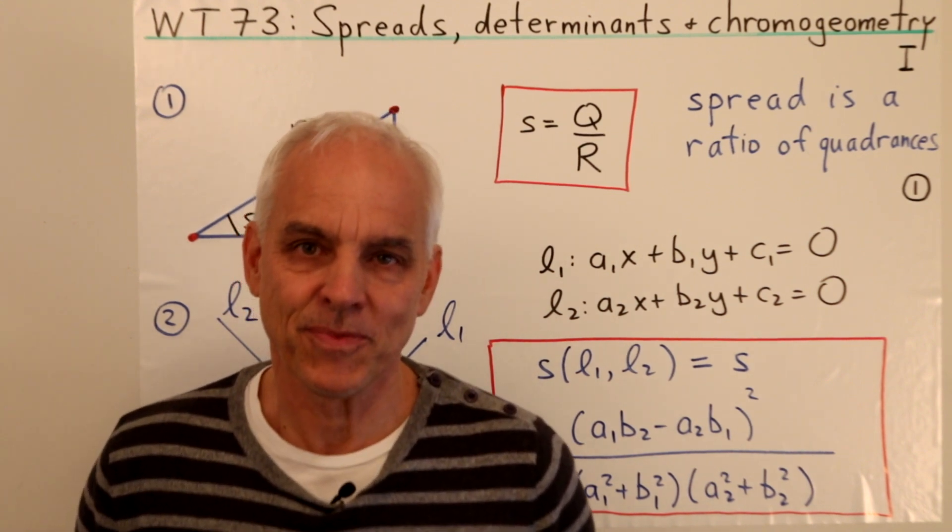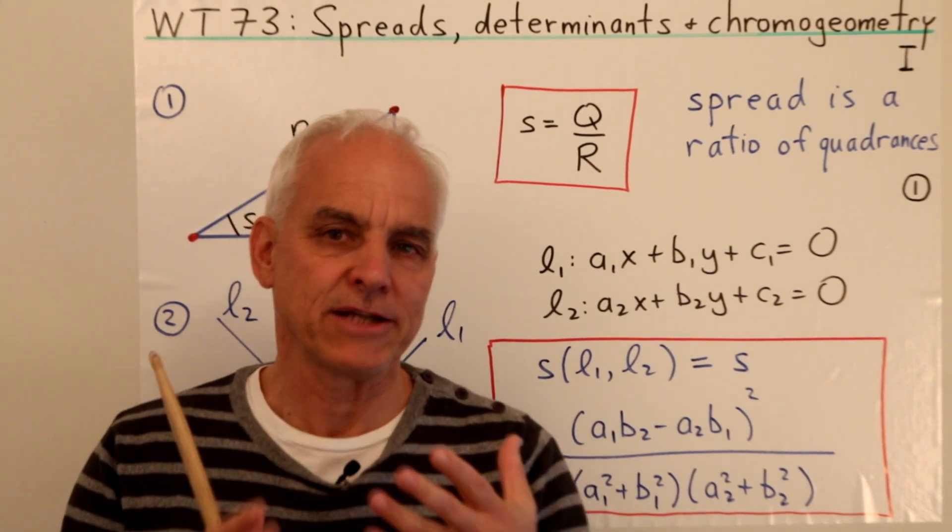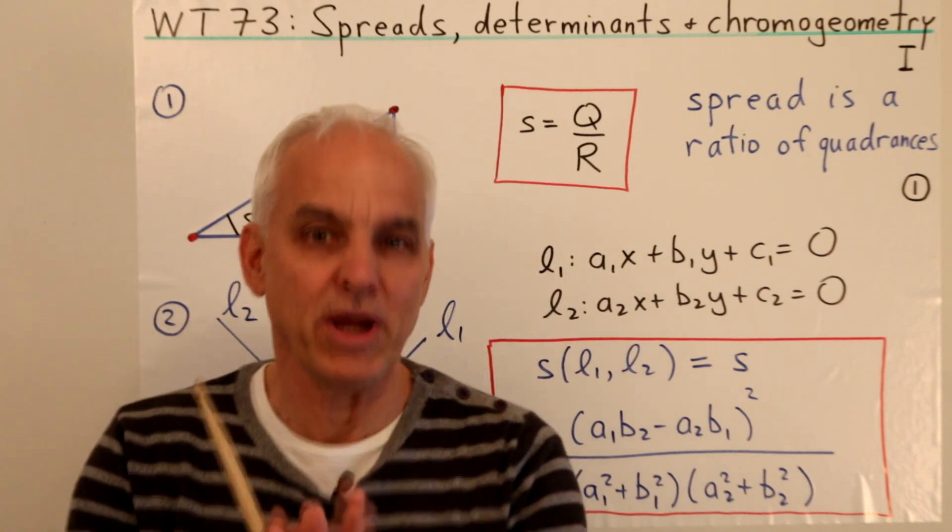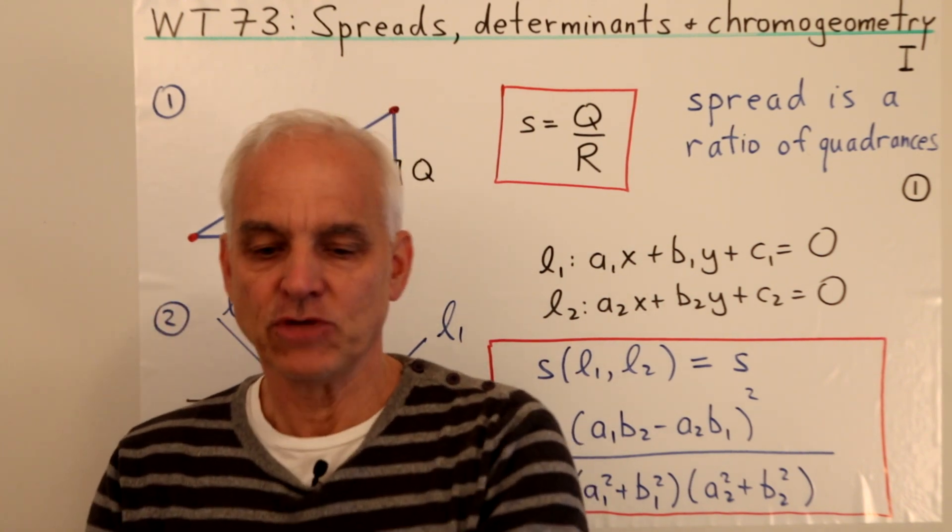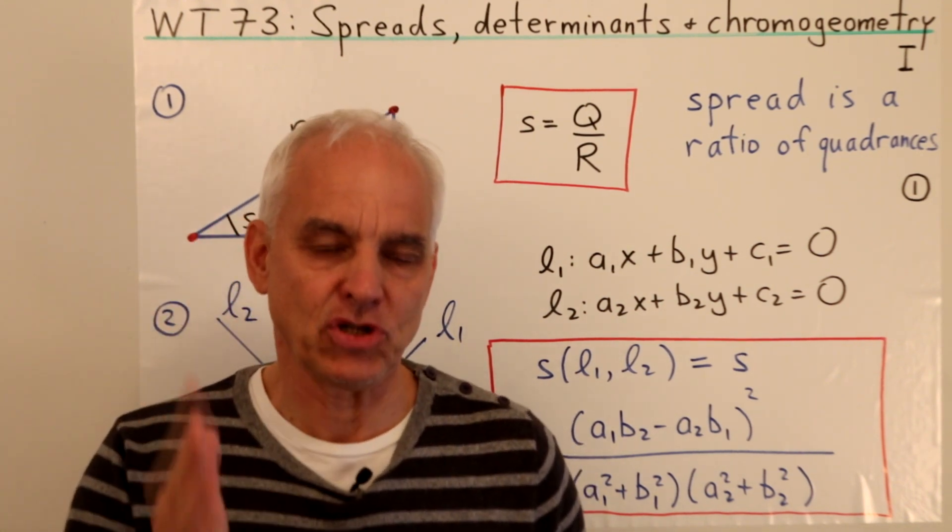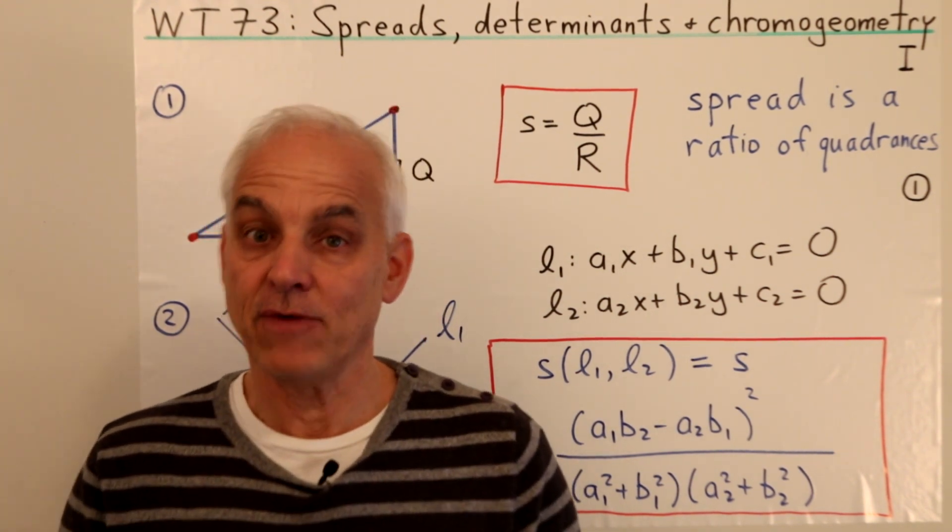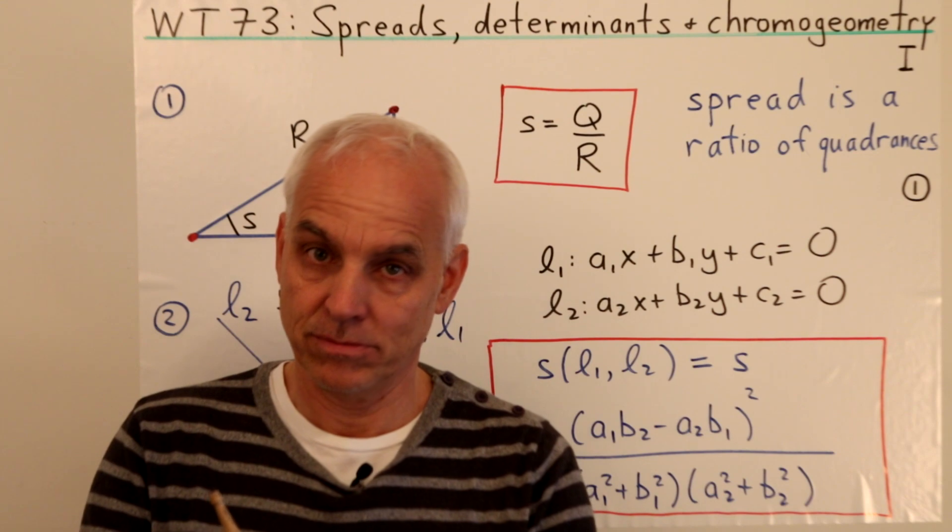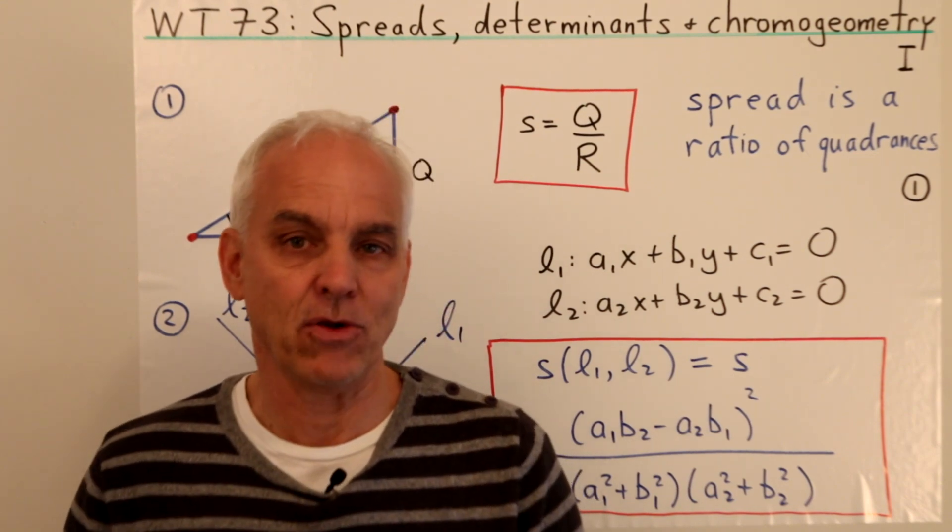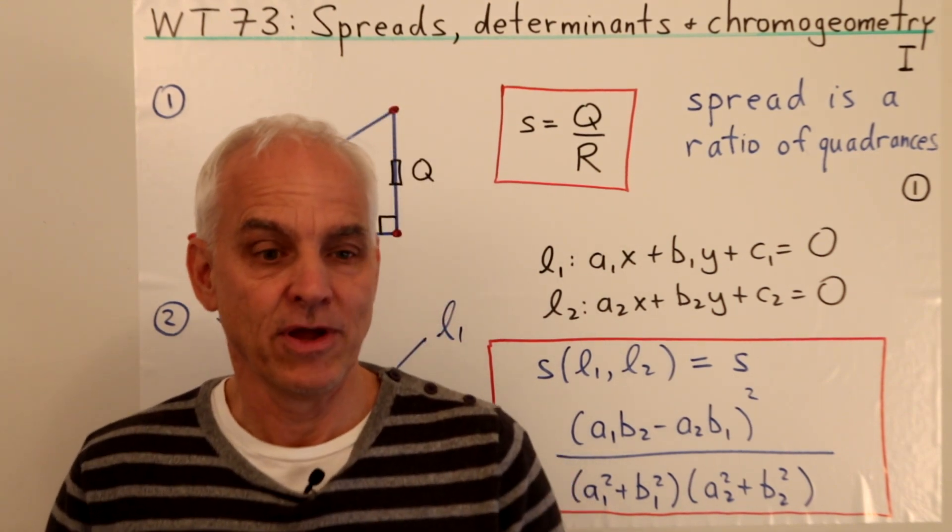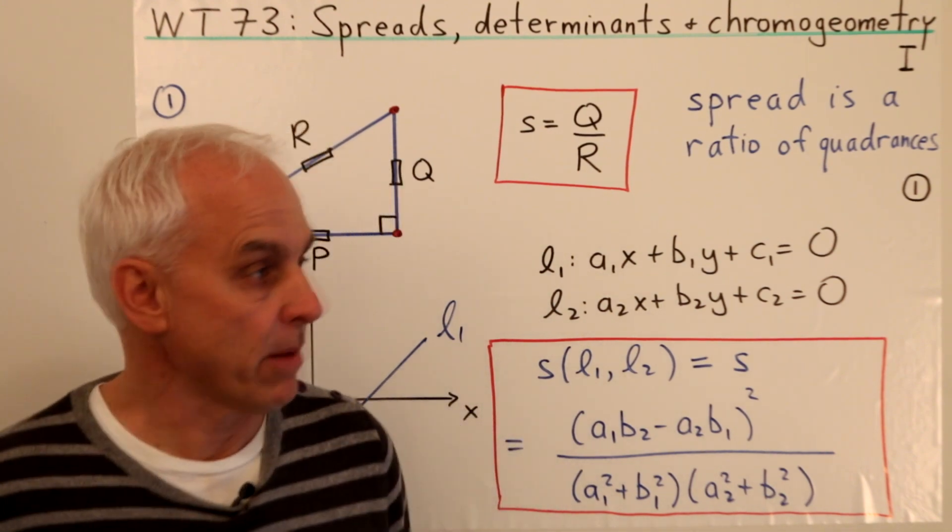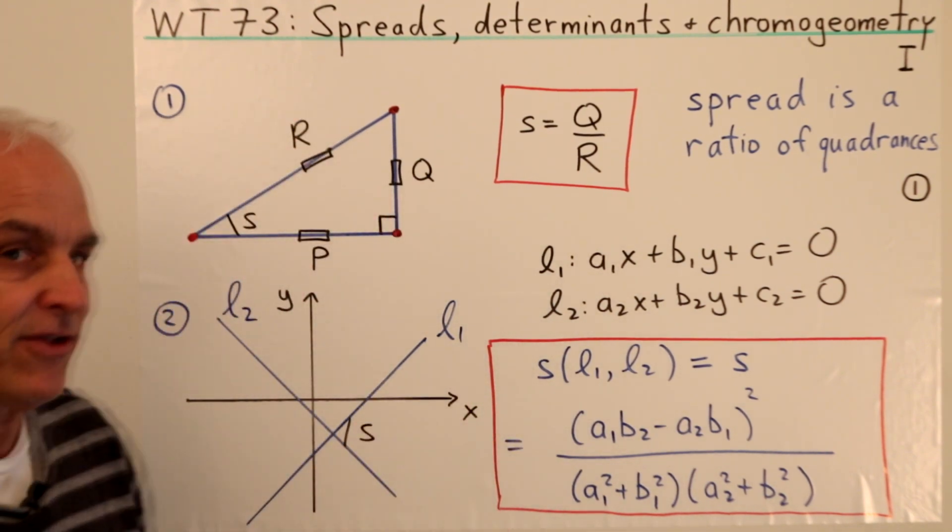Hi, I'm Norman Wildberger. In today's video, we want to connect the notion of spread with the idea of a determinant. We want to apply determinants to rational trigonometry to explain the replacement of an angle, an algebraic replacement of an angle which is called the spread, which is of course absolutely crucial for rational trigonometry. Let me remind you what that is.